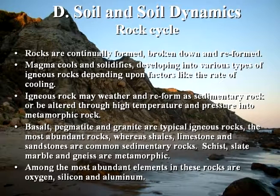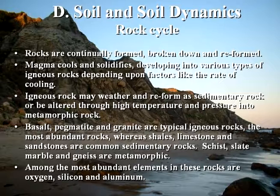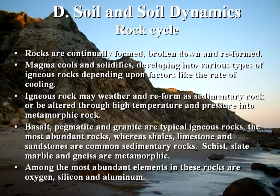One last point to be made is that among the most common elements in all these kinds of rocks are oxygen, silicon, and aluminum. That's not to say there aren't a number of elements in addition to those that are present, but these are typically the most abundant elements in crustal rocks on the earth.